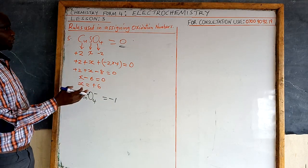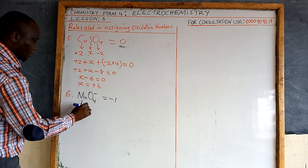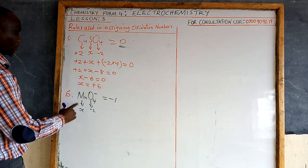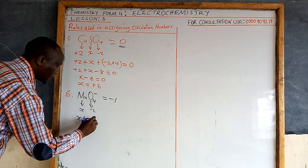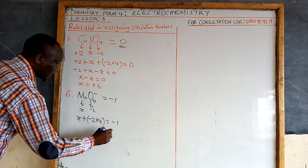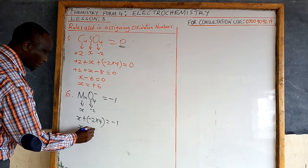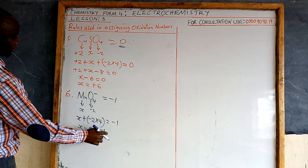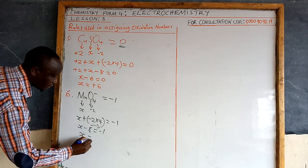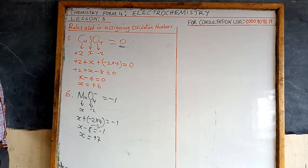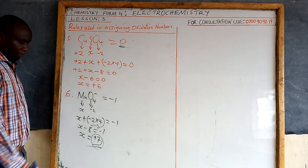For example, to calculate the oxidation number of manganese in MnO₄⁻: the charge is negative one, so the total equals −1. Let manganese be x; oxygen is −2, and there are four oxygen atoms. So: x + (−2 × 4) = −1, giving x − 8 = −1, therefore x = +8 − 1 = positive seven. This is why this compound is called manganate seven — the oxidation number of manganese is +7.